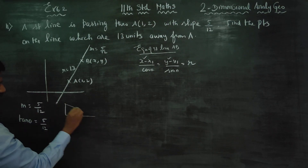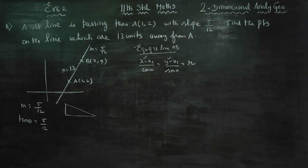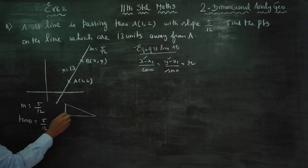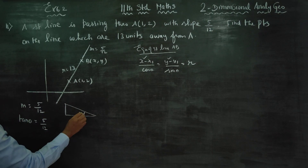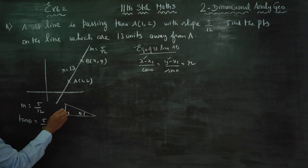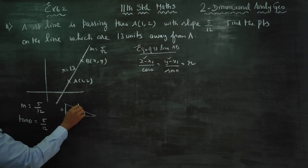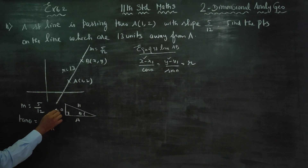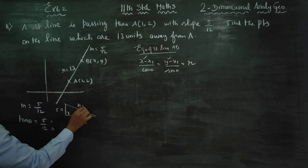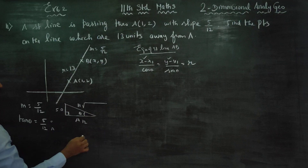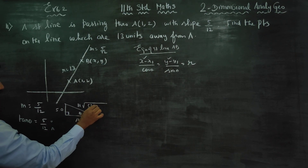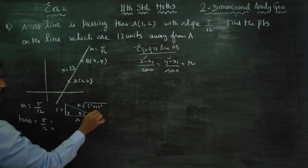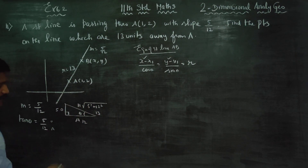I am going to draw a right angle triangle. This is theta, this is 90 degrees. This is my opposite side, this is my hypotenuse, and this is my adjacent. Tan theta is opposite by adjacent, so opposite is 5 and adjacent is 12. To find the hypotenuse: 5 squared plus 12 squared gives 169, so the hypotenuse is 13.